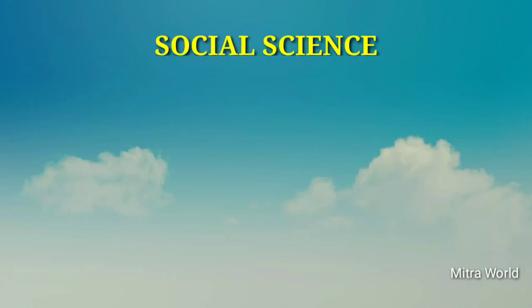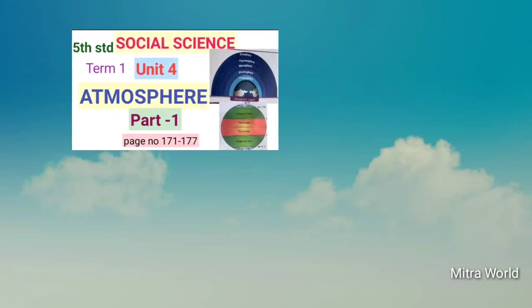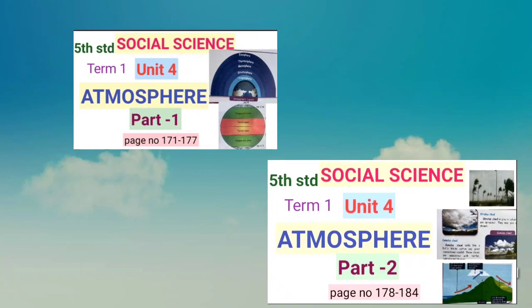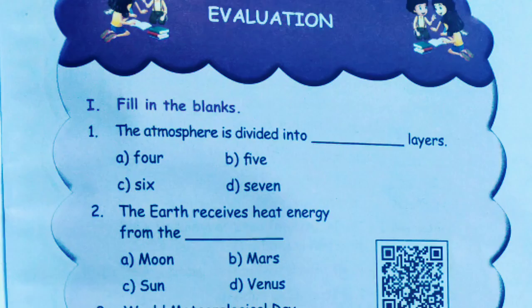Good morning children. Social science, term 1, unit 4, atmosphere — evaluation part, book back exercise. Children, before watching this evaluation video, first watch the explanation video of this lesson. Explanation video links are below in the description box. First go and see the explanation video. Now, book back exercise — children, take page number 185 in your social science book.